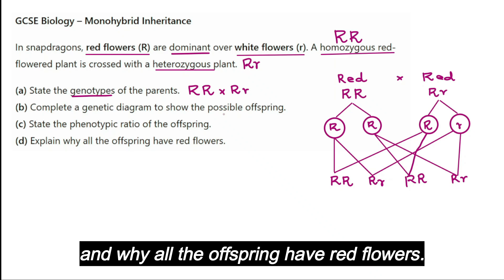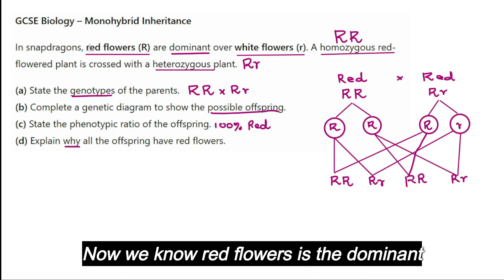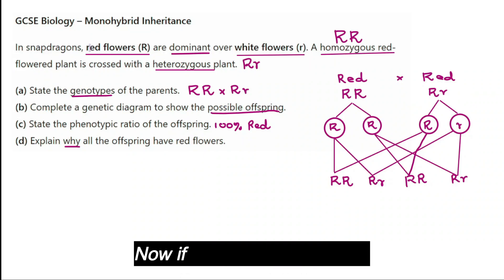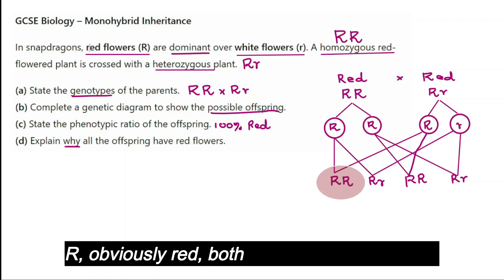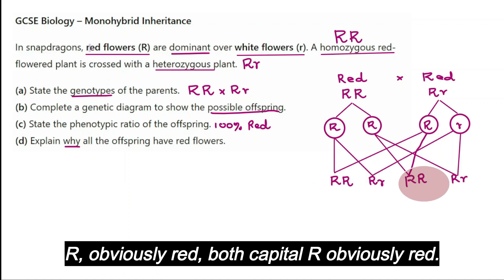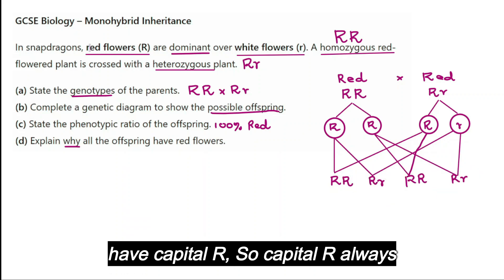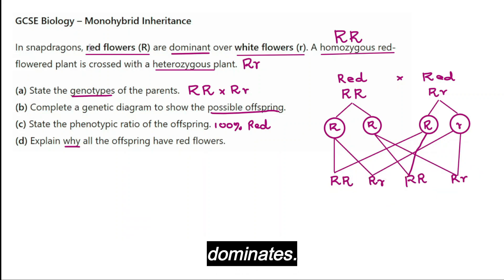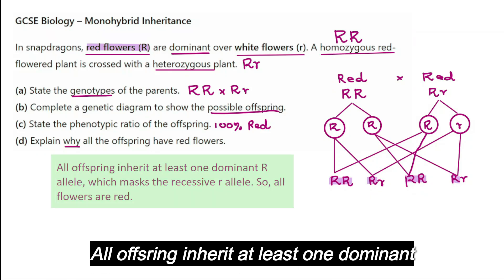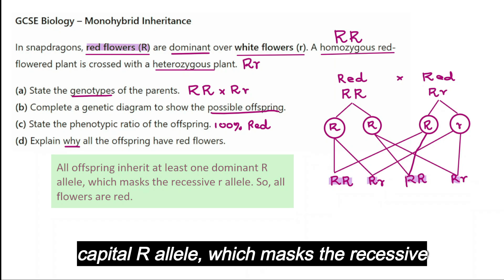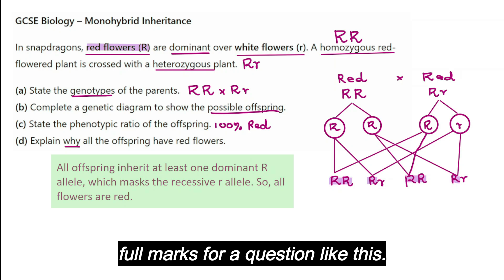Explain why all the offspring have red flowers. Red flowers is the dominant feature — capital R. All offspring here contain at least one capital R, so they are all red. Capital R always dominates. All offspring inherit at least one dominant capital R allele which masks the recessive lowercase r, so all flowers are red. And you'll get full marks for a question like this.